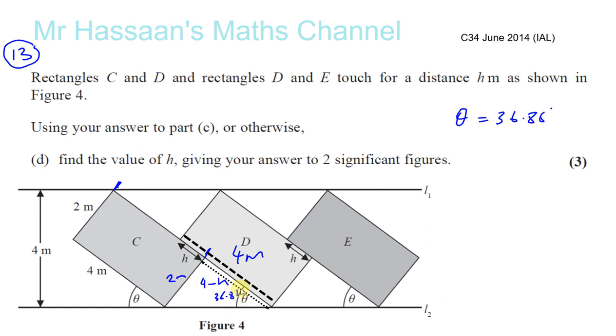So we've basically got a right-angled triangle. This length is 4 minus H. This is the right angle. This length here is 2 meters. And this angle here is 36.86.